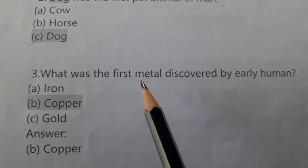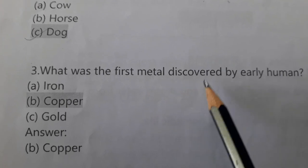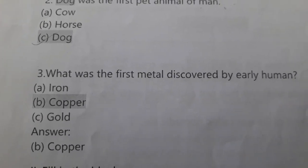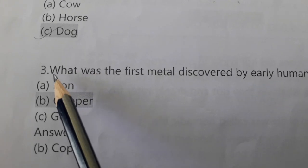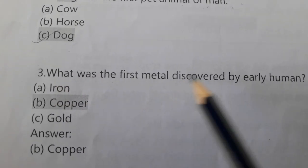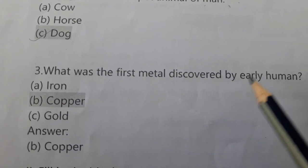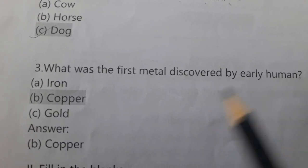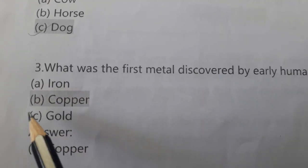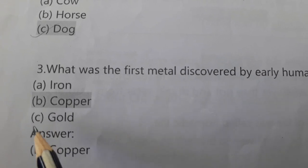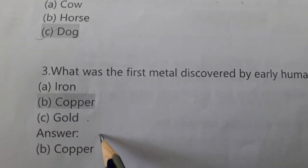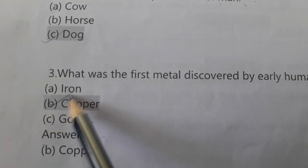Third question: What was the first metal discovered by early humans? Option A: iron. Option B: copper. Option C: gold. The answer is copper, Option B.